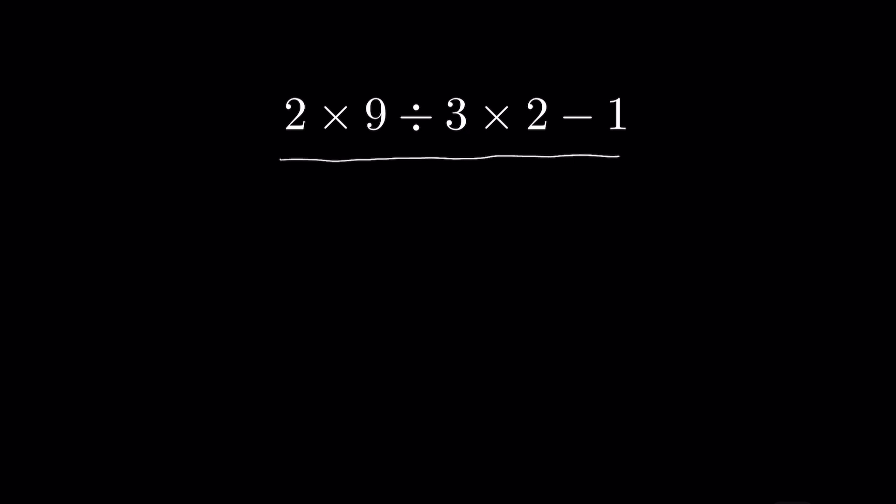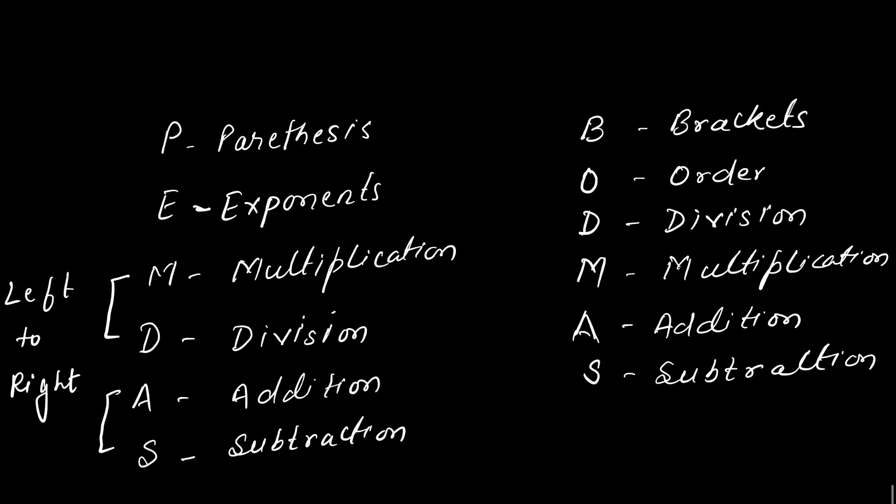We follow the rule of PEMDAS or BODMAS. That is P for parenthesis, E for exponents, M for multiplication, D for division, A for addition, and S for subtraction. This multiplication and division, as well as this addition and subtraction, are grouped together. This means they do not have any exact order, but we solve them from left to right.